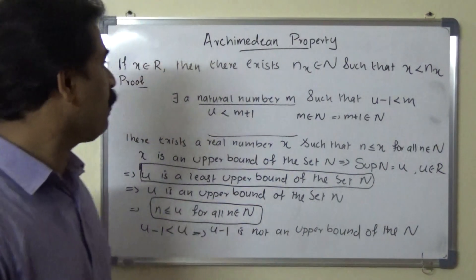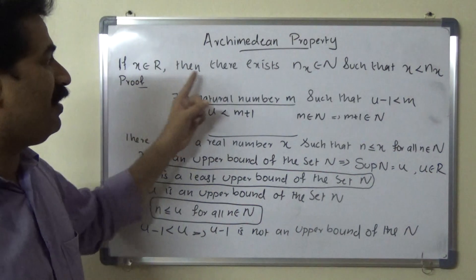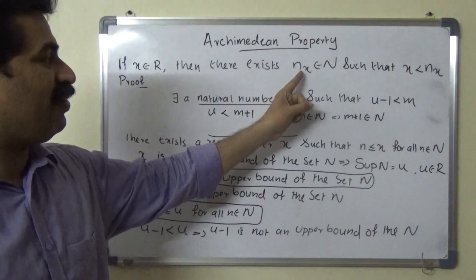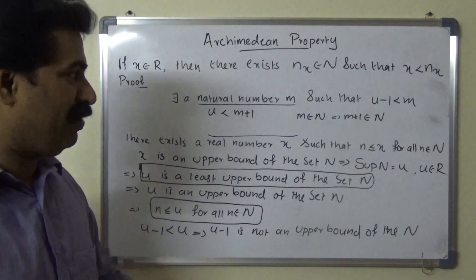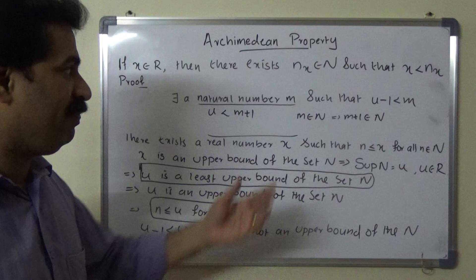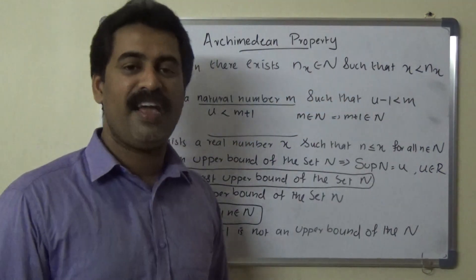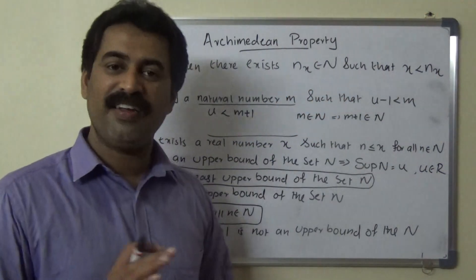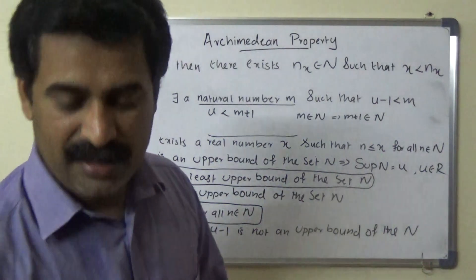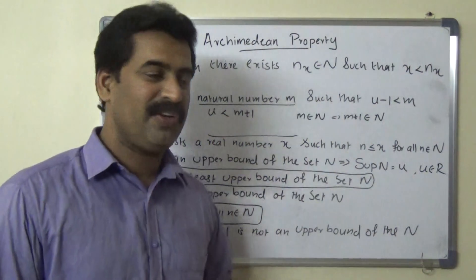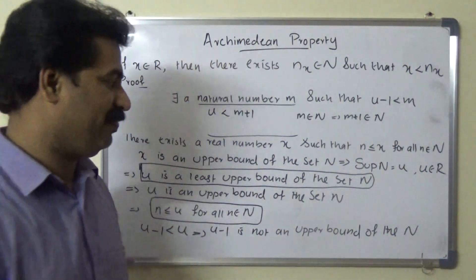Then we can say that if x belongs to R, then there exists a natural number nx belonging to capital N such that x is less than nx. I hope you have enjoyed my class. Thank you.